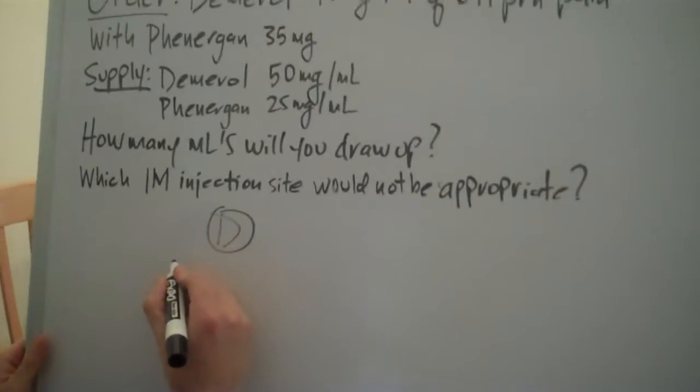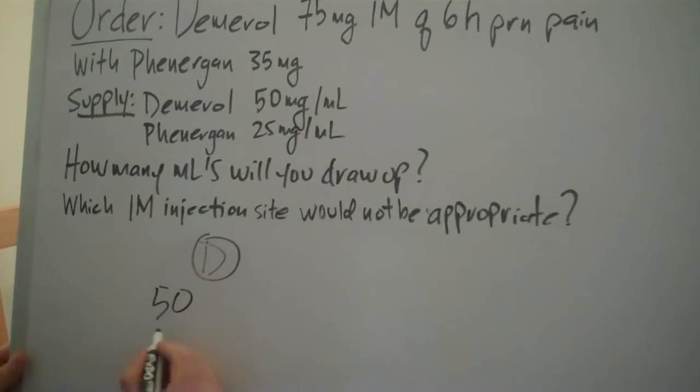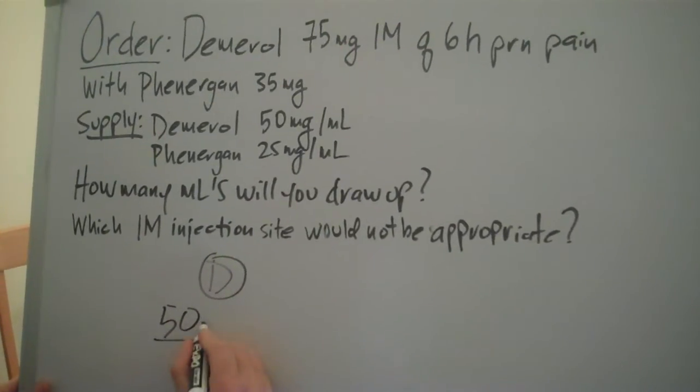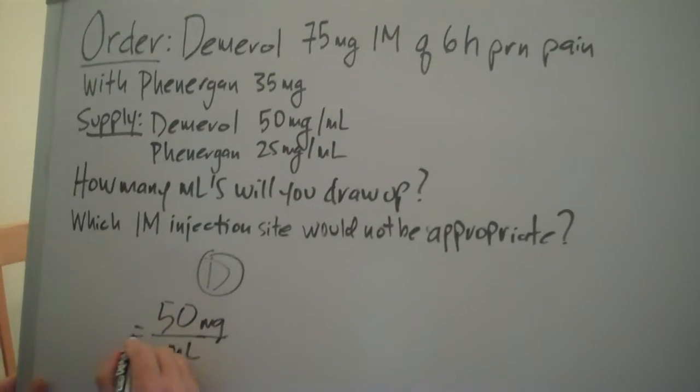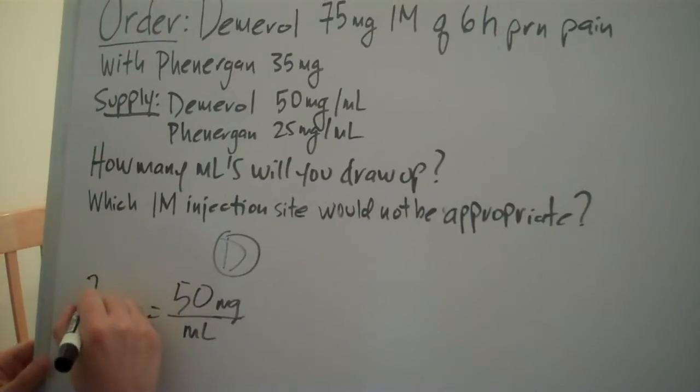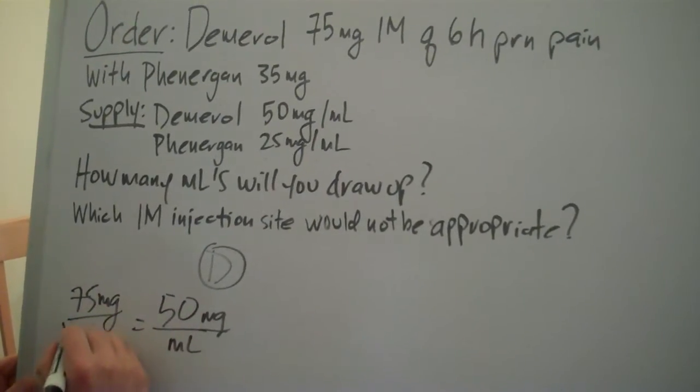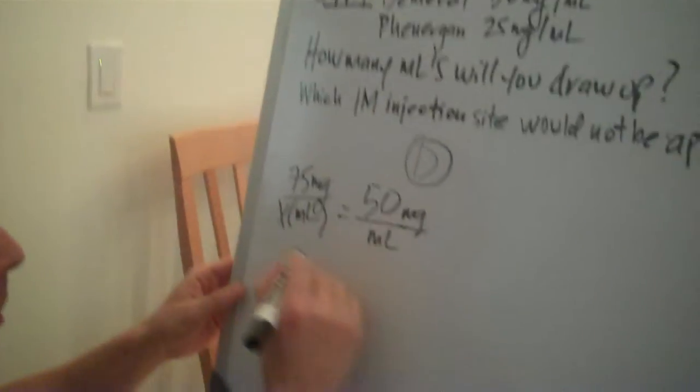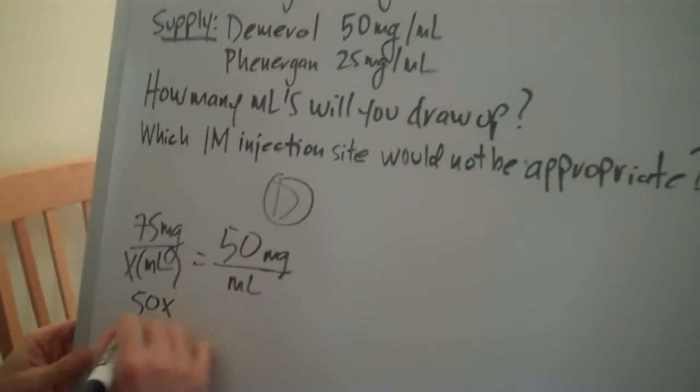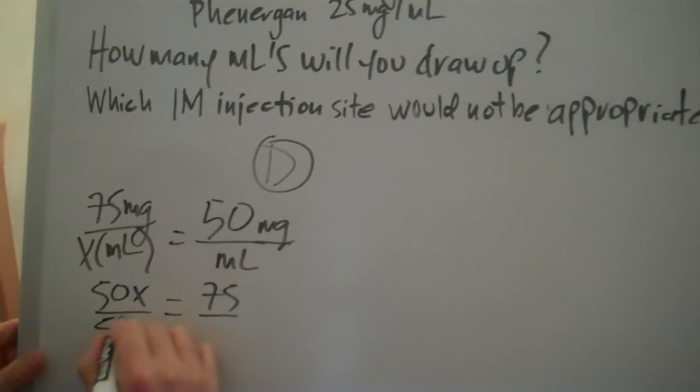First off, we'll figure for Demerol. Our supply over an ml, our order is 75mg over x, which is our amount desired in milliliters. We're going to cross-multiply, divide by 50.